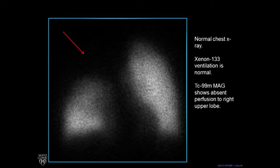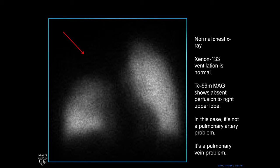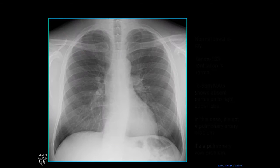Most often when this happens it's an obstruction of the pulmonary artery. But in this case, in this patient, it's not a pulmonary artery problem — it was a pulmonary vein problem. If your pulmonary vein cannot drain the lung, then the body reflexively stops sending blood supply to the lung, and you get a situation like this.